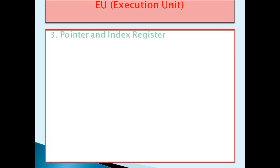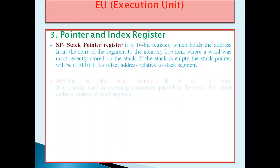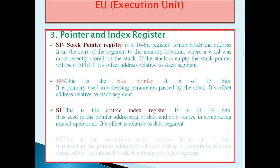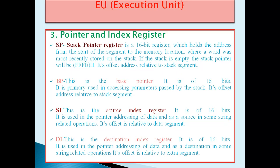The third functional unit in the Execution Unit is the Pointer and Index Register, which contains two pointer registers and two index registers. The first is the Stack Pointer (SP), a 16-bit register that holds the address from the start of the segment to the memory location where a word was most recently stored on the stack. If the stack is empty, the stack pointer will be FFFEH as its offset address relative to the stack segment. The second pointer register is BP, the Base Pointer, a 16-bit register primarily used in accessing parameters passed by the stack.